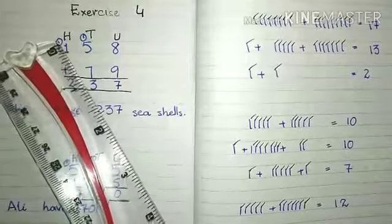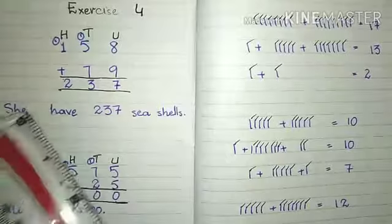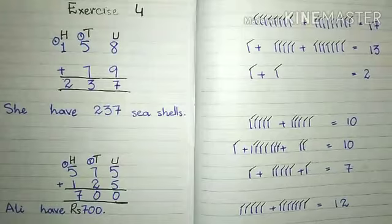Again from 13, 3 we will write down and 1 will go up. We know 1 plus 1 is equal to 2. It means now she have 237 seashells. Ab uske paas 237 seashells ya sepiaan.